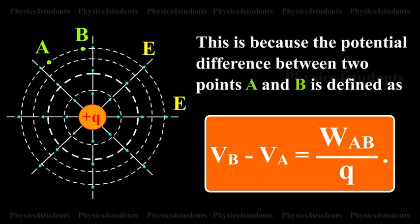This is because the potential difference between two points A and B is defined as VB minus VA is equal to WAB by Q.